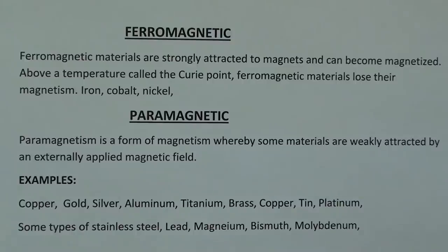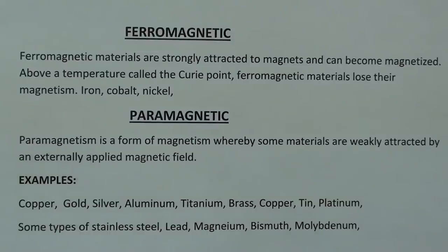Now the definition of paramagnetic: paramagnetism is a form of magnetism whereby some materials are weakly attracted by an externally applied magnetic field. Examples are copper, gold, silver, aluminum, titanium, brass, tin, platinum, some types of stainless steel, lead, magnesium, bismuth, and molybdenum.